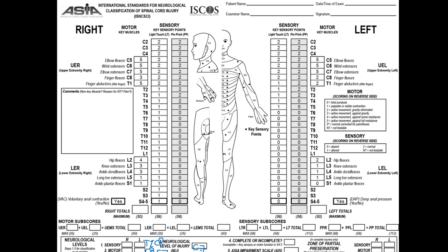Let's check our answers: sensory right T1, sensory left C8, motor right C8, motor left C7, and neurological level of injury C7. Yes, those are our answers — C7 is the neurological level.